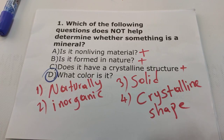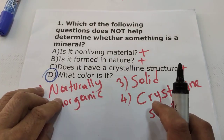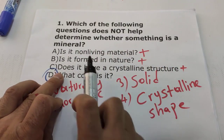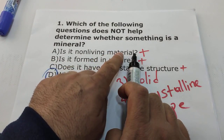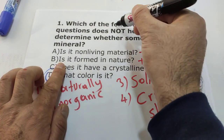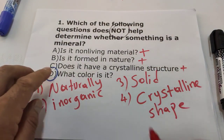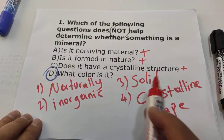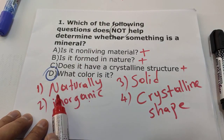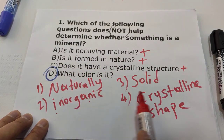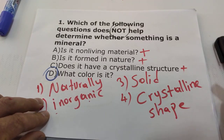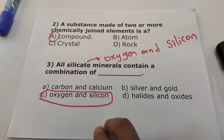Hi students, let us solve some questions for Grade 7 about minerals. Question one: which of the following questions does not help determine whether something is a mineral? Option A, is it non-living material — inorganic — that is true. The four properties of mineral are naturally occurring, inorganic, solid, and crystalline shape. There is nothing about color, so the answer will be D.